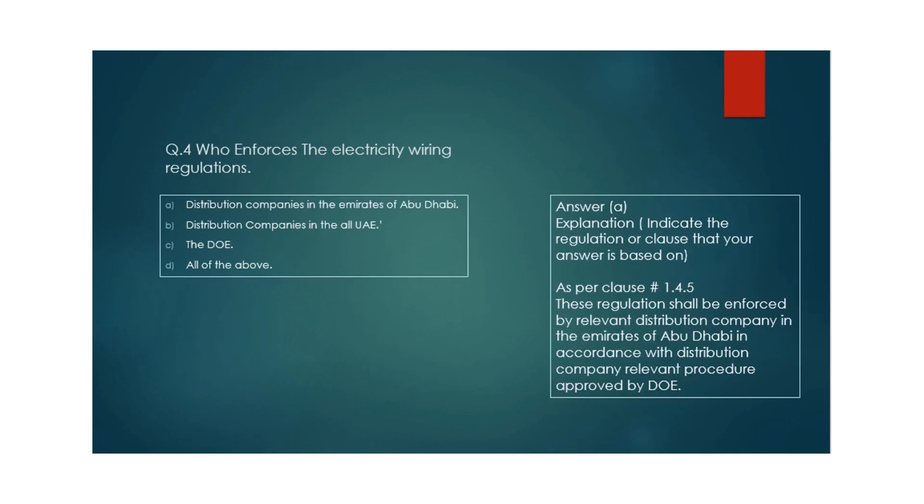Question 4: Who enforces the electricity wiring regulations? Options: distribution companies in the Emirates of Abu Dhabi, distribution companies in all UAE, the Department of Energy, or all of the above. The answer is option A. As per clause 1.4.5, these regulations shall be enforced by the relevant distribution company in the Emirates of Abu Dhabi. The guardian to enforce regulations is Abu Dhabi Distribution Company in Abu Dhabi, DEWA in Dubai, and FEWA in Fujairah.